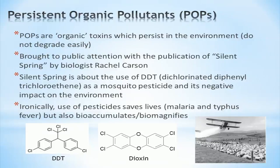Humans have deliberately sprayed POPs without knowing how they interact within the environment, in some cases leading to ecosystem collapse and unidentified illnesses and cancer outbreaks in populations where spraying occurred. Ironically, the use of pesticides saves lives by killing pests which spread malaria or other infectious diseases, but they also bioaccumulate and biomagnify in the environment. In some areas in Africa, DDT is still sprayed to combat malaria, but its use in western countries has long been banned.